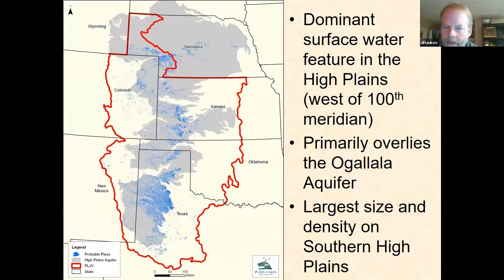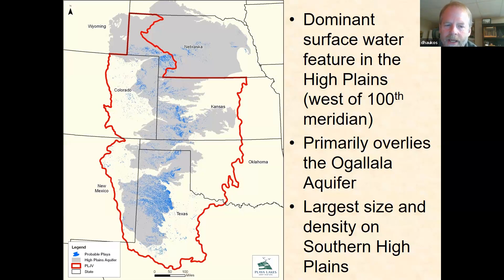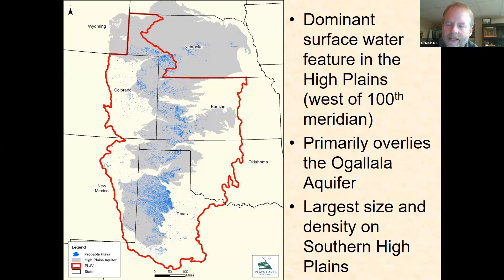So where are playas located? Playas are the dominant surface water feature on the high plains of the Great Plains, or in other words, west of the 100th meridian. Playas primarily overlie the Ogallala Aquifer across Texas, New Mexico, Oklahoma, Kansas, Colorado, and a few in Nebraska. Some people claim there are playas in Wyoming and Montana, but those are probably not true playas in my opinion. The largest size and density of playas occurs on the southern high plains of Texas and New Mexico — the Llano Estacado, or south of the Canadian River.